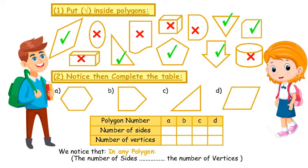Polygon A: How many sides does it have? 1, 2, 3, 4, 5, 6 — it has 6 sides. How many vertices does it have? 1, 2, 3, 4, 5, 6 — it has 6 vertices.